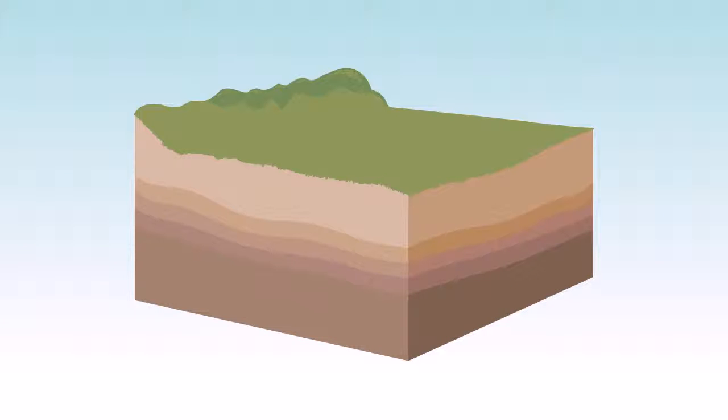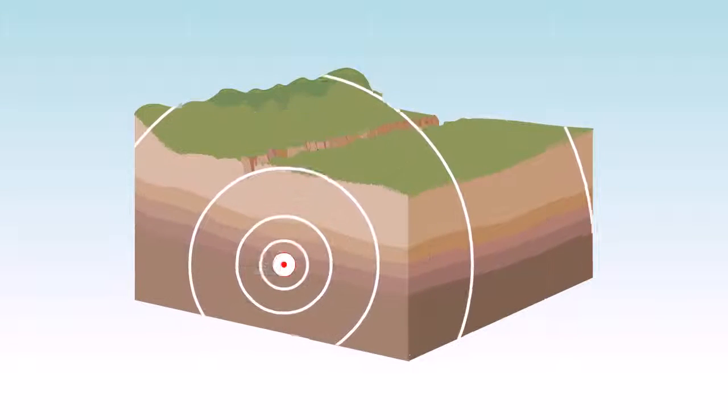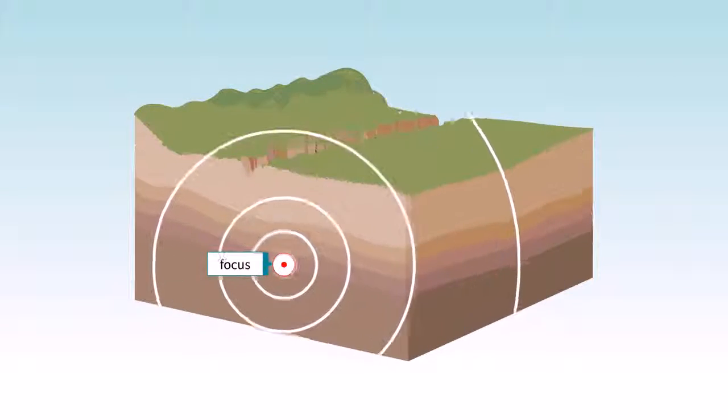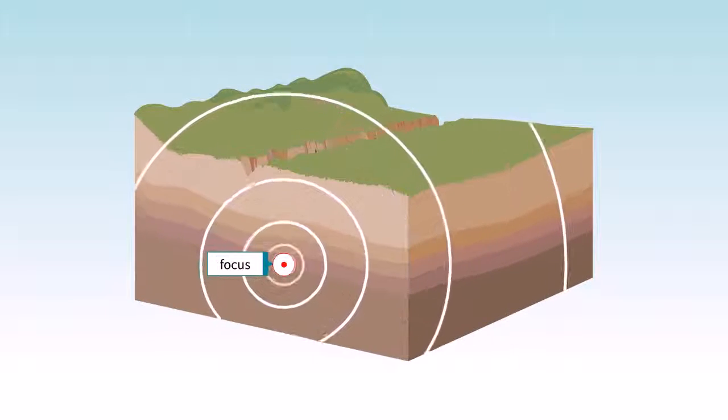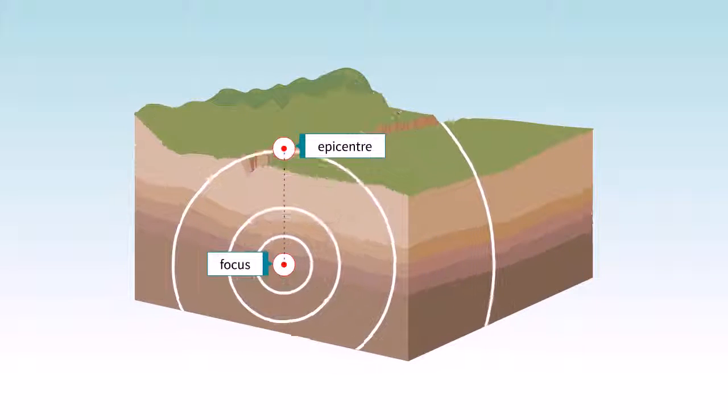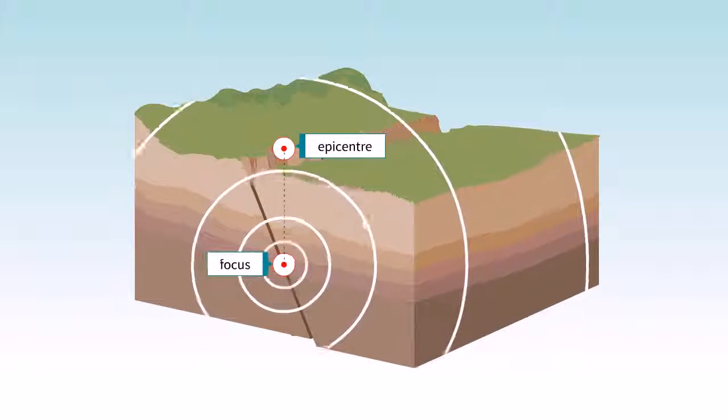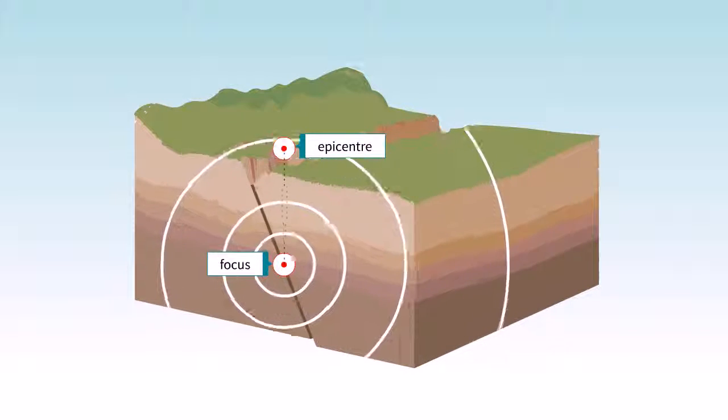When there is an earthquake, seismic waves spread out from the earthquake's focus and carry energy through the interior of the Earth. The epicenter is directly above the focus. The shaking from an earthquake gets weaker as the distance from the epicenter increases.